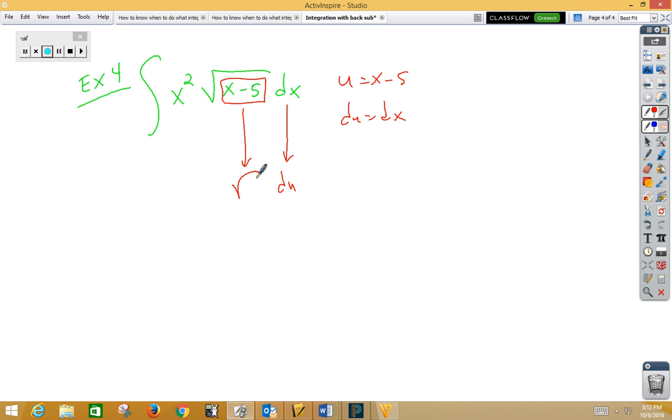Well, that doesn't really change this step. Again, we're going to say x is u plus 5 because we're going to add 5 to the other side. Now we've got u plus 5 squared.